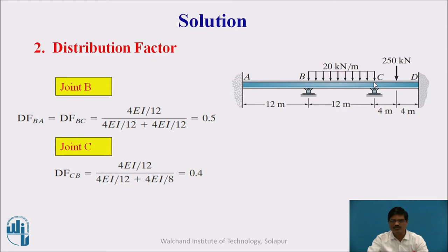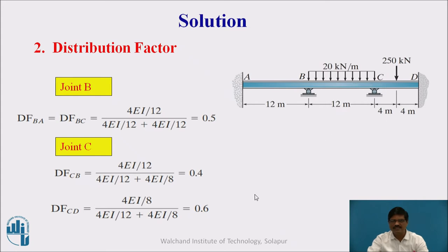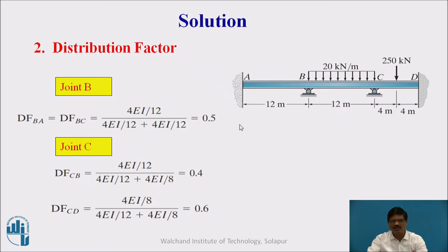At joint C we have two members, CB and CD. The distribution factor DFCB equals the stiffness of CB divided by the stiffness of joint C, which works out to be 0.4. The distribution factor DFCD equals the stiffness of CD divided by the stiffness of joint C, which works out to be 0.6. The summation of distribution factors at every joint must equal 1: at joint B, 0.5 + 0.5 = 1, and at joint C, 0.4 + 0.6 = 1.